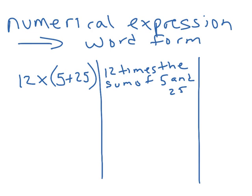We do 5 and 25 first because it's in the parentheses, which gives us 30, and then we multiply 30 times 12. I know 12 times 3 is 36, and ten times more is 360. So that would be the answer for 2a — we take the numerical expression, change it into word form, and then solve it.